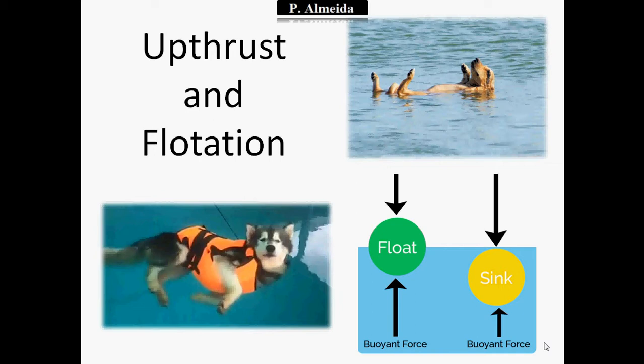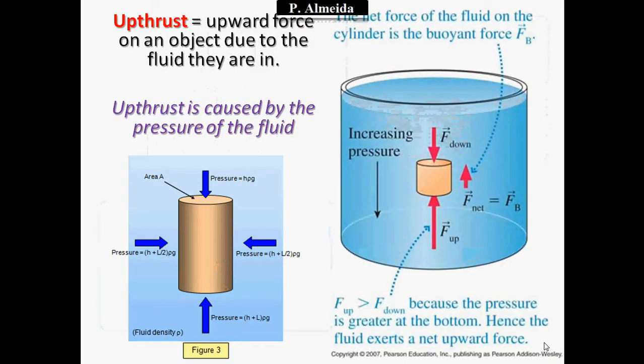So we are going to figure out what is the way that I can figure out if an object is going to float or sink. Let's get some definitions right. Number one: uptrust. Uptrust, by definition, is the upward force on an object due to the fluid they are in. The uptrust is caused by the pressure of the fluid.